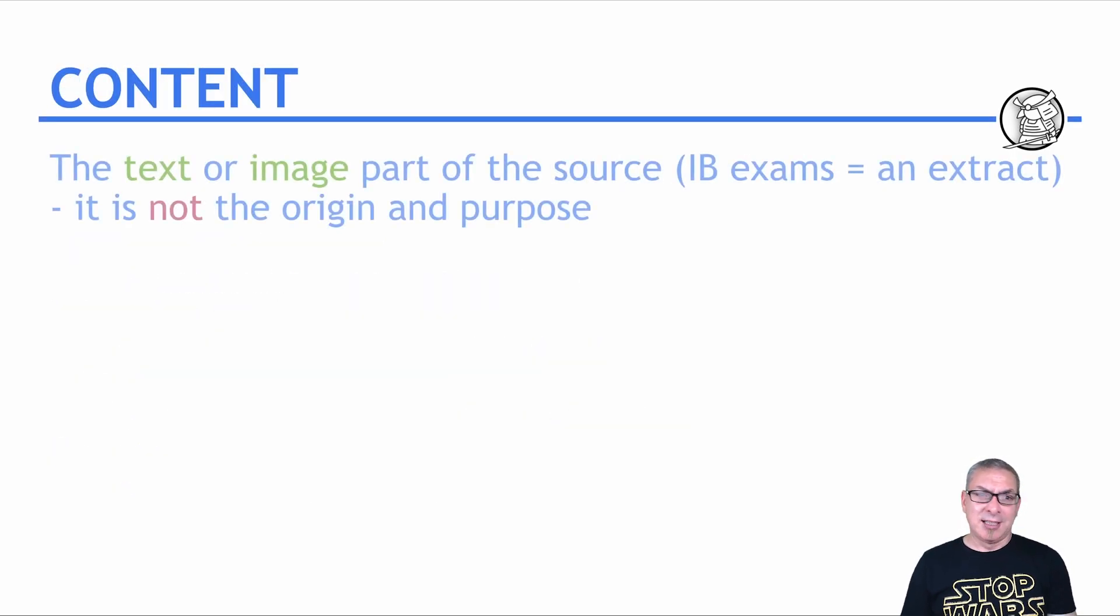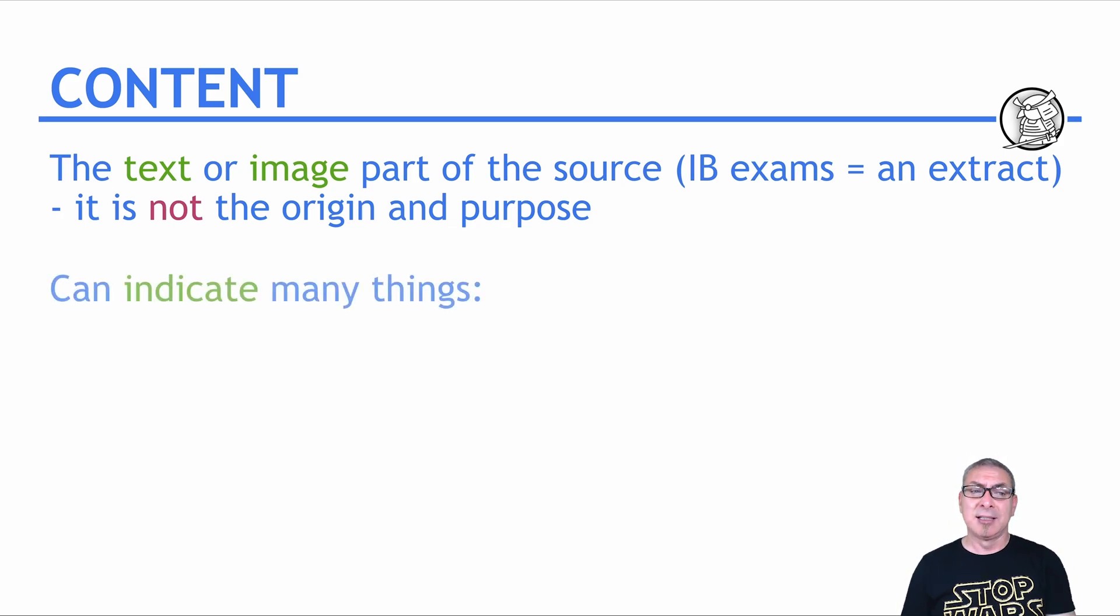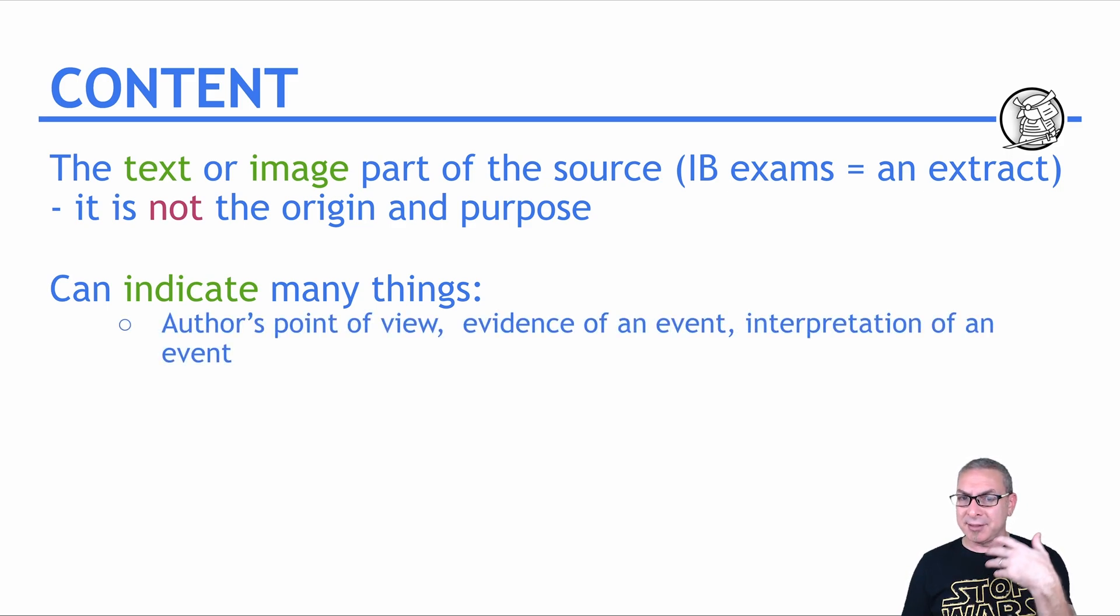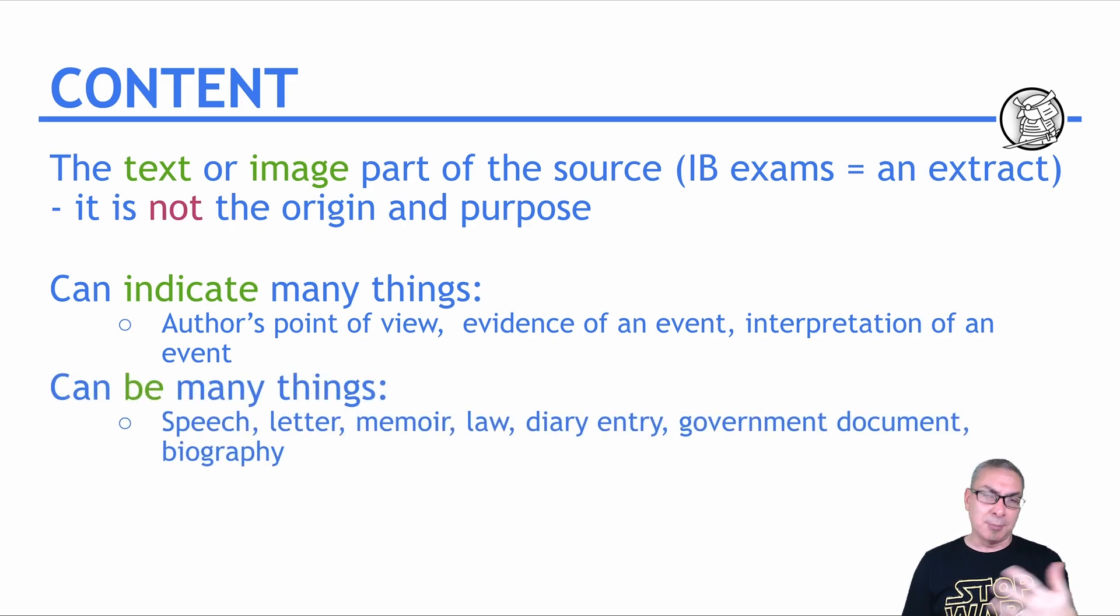The content. Basically, this is the text part or the image part of a source, or maybe it's got text and image. It is not the origin, and it is not the purpose. It is what's in the actual source. Keep that in mind, please. It can indicate many things, the content that is. It could give the author's point of view. It could be evidence of an event. It could be the interpretation of an event, and it can be many different things, like a speech, a letter, a memoir, a law, that kind of thing.